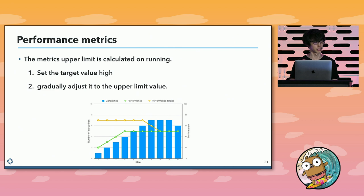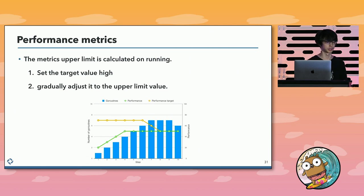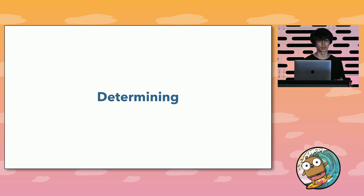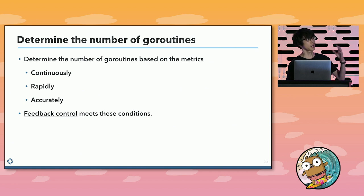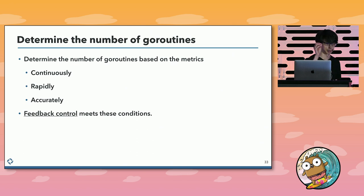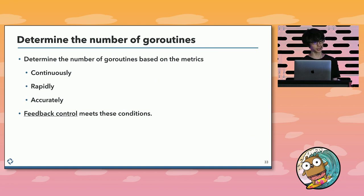In this subsection, I will consider how to determine the number of concurrency rapidly, continuously, and accurately. In the previous subsection, we defined performance metrics and a dynamic value. Next, we have to consider how to determine the number of goroutines to meet the target value. In the basic idea subsection, we increase goroutines one by one. But it has to determine rapidly, continuously, and accurately to adjust the number of goroutines to rapid changes in the actual environment.